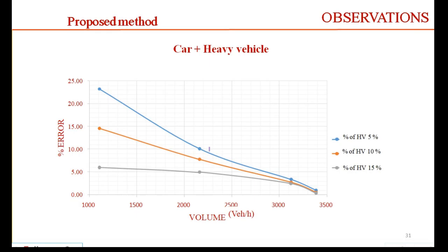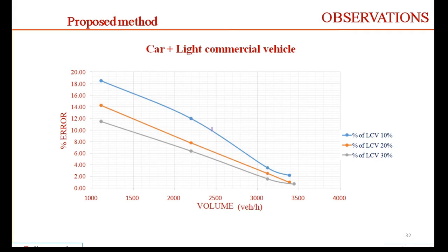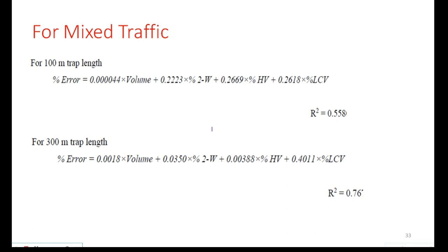In the case of heavy vehicles, the trend is reversed: with 5%, 10%, and 15% heavy vehicles, percent error decreases as the proportion increases, because heavy vehicles create more congestion and flow tends to be more uniform. Light commercial vehicles behave similarly to heavy vehicles as they are larger than cars. Finally, an equation was developed: given a 100 m trap length with particular traffic volume and proportions of heavy vehicles, two-wheelers, cars, and LCVs, this equation estimates the likely percent error in density measurement using 10 snapshots.